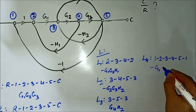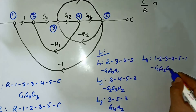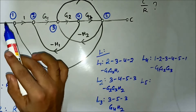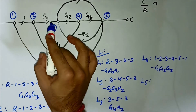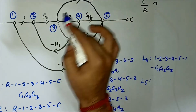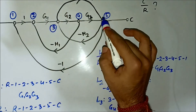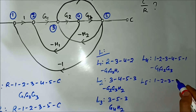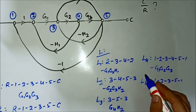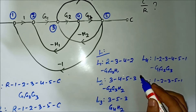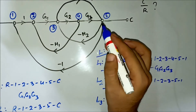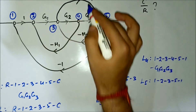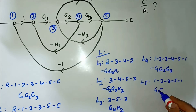A fifth loop is 1→2→3→5→1, passing through the -G4 branch. The two minus signs cancel, giving a gain of G1·G4. So we have two forward paths and five loops.